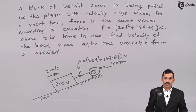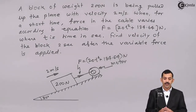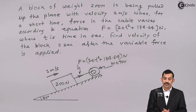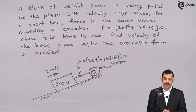Hi friends, we will solve a problem on the D'Alembert's principle. What is given? A block of weight 200 Newton is being pulled up the plane with velocity 2 meters per second. For a short time, the force in the cable varies according to the equation F equal to 20t² plus 134.64 Newton, where t is time in seconds. Find the velocity of the block 2 seconds after the variable force is applied.